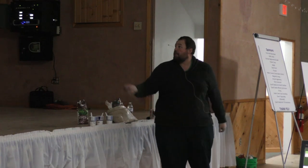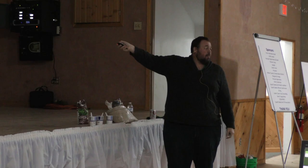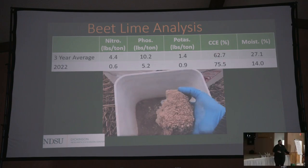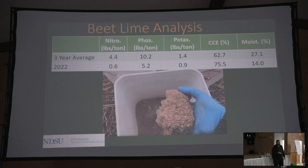The material I've been working with in my research is sugar beet waste lime. There are a number of sugar beet factories in North Dakota — about half a dozen in the Red River Valley, plus one in Sidney, Montana. The beet lime has a little bit of nitrogen, a decent amount of phosphorus, and a hint of potash. Our beet lime has ranged from as low as 50% to as high as about 80% calcium carbonate equivalence; the stuff used for this project sits around 75%.